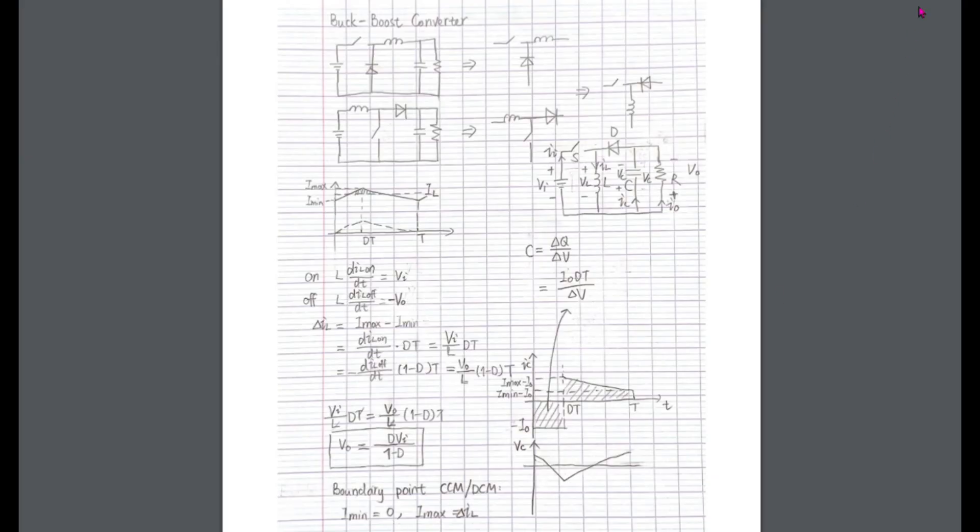We now simplify the buck-boost schema and can see that the core structure is the inductor, the switch, and the diode. The buck-boost converter is just another way to arrange these three elements. On a steady state, we have two phases.